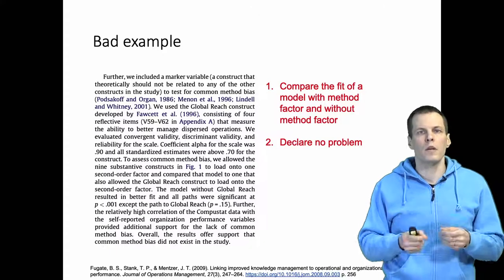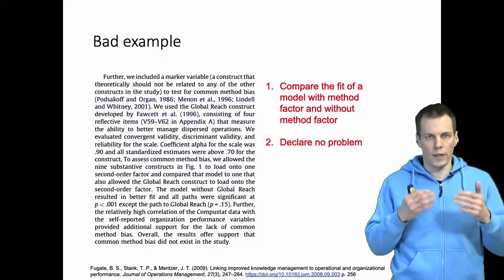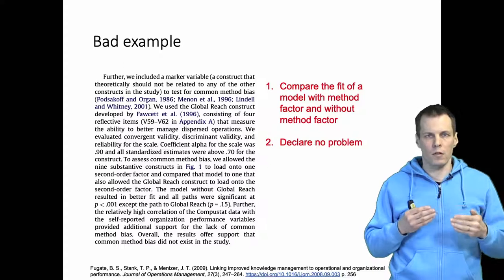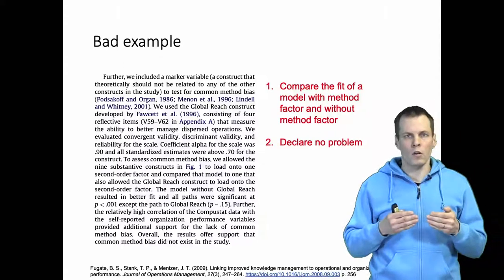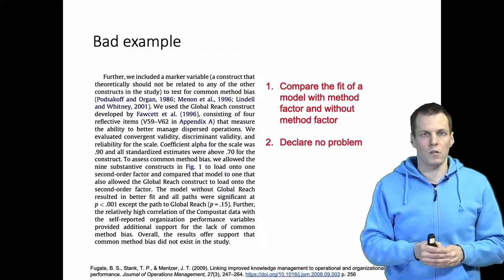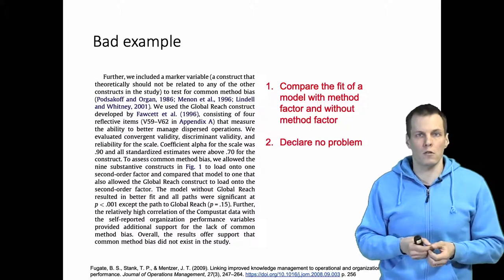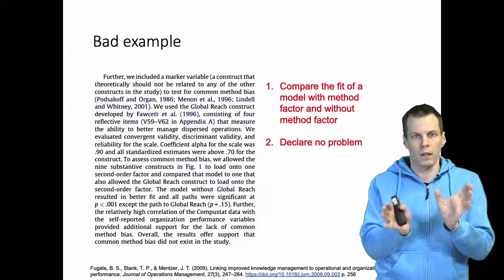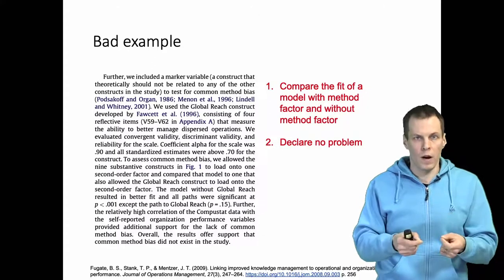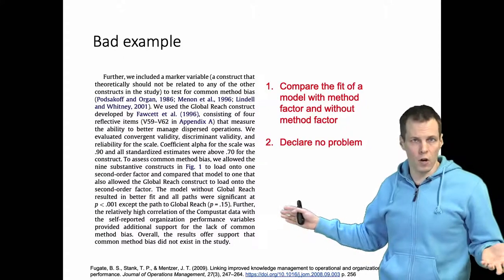So instead of looking at whether the factor model with the method factor explains the data better than the model without the method factor, you should be looking at the magnitude of the estimate. Does the method factor, regardless of whether it fits the data well or not, explain the indicators more or to roughly comparably than the actual indicators, and what is the magnitude of method variance in the indicators? You should look at how are the correlations between items affected, or regressions between the latent variables. Look at is there method variance and if there is, does the method variance cause bias, and if so, how much? Just looking at whether relationships stay significant or not is insufficient.